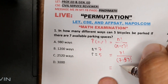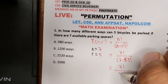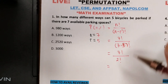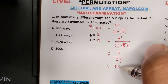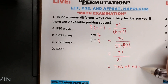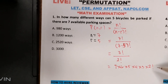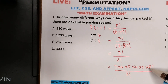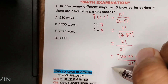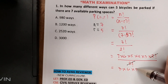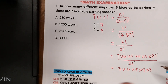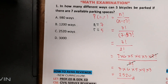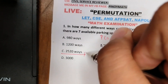We need to continue. 7 factorial on top, all over 2 factorial. 7 minus 5 equals 2 factorial. Now expand 7 factorial as 7 × 6 × 5 × 4 × 3 × 2 factorial. Since the denominator is 2 factorial, we can cancel them. What remains is 7 × 6 × 5 × 4 × 3. Multiplying them all gives 2,520. So the answer for question number 1 is 2,520 — letter C.